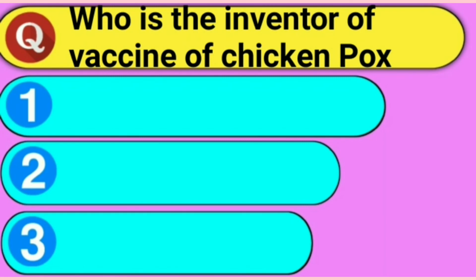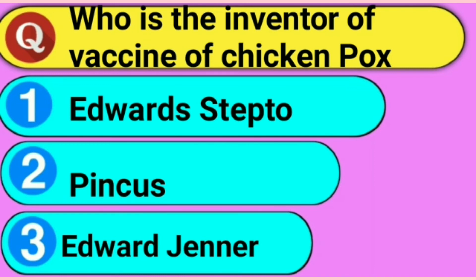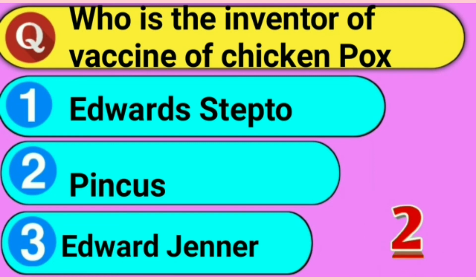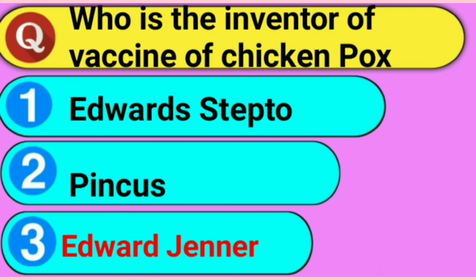Who is the inventor of the vaccine for chicken pox? Your time starts now. Answer: Option 3, Edward Jenner.